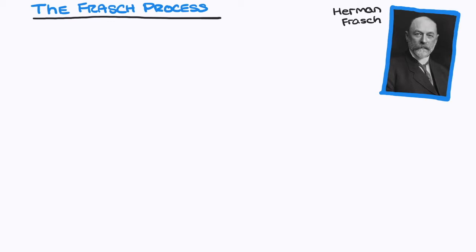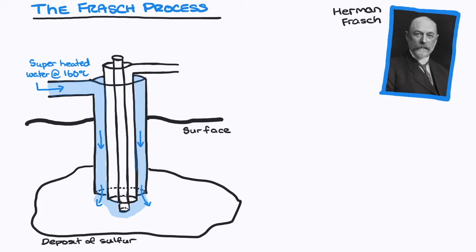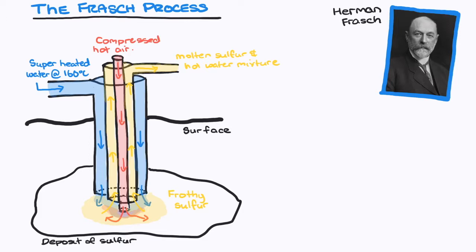German-American chemist Herman Frasch developed the process to extract sulfur from underground deposits. This involved using three concentric pipes which are lowered down into the ore. Superheated water at about 160 degrees Celsius is pumped down the outer pipe, and compressed hot air is blown down the inner pipe. This forces a frothy mixture of molten sulfur and water up the middle pipe, because water and sulfur don't mix.